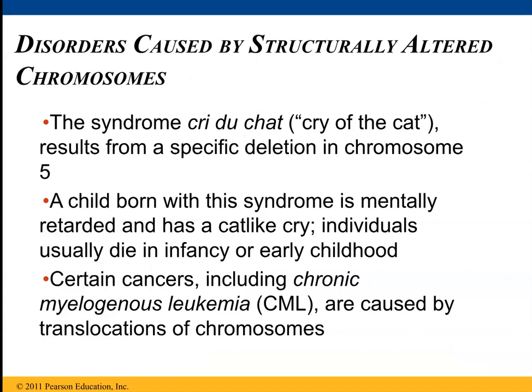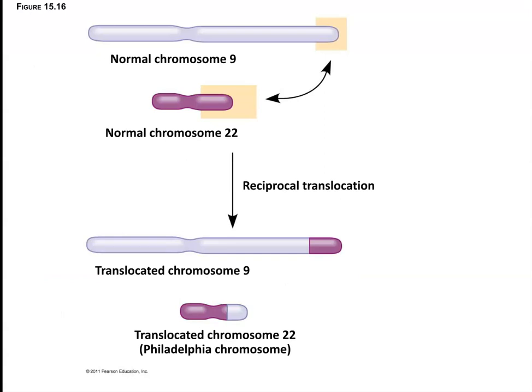A specific deletion of chromosome 5 is called Cri du Chat, or cry of the cat. Chronic myeloid leukemia is due to a specific translocation called the Philadelphia chromosome, where a portion of chromosome 9 is translocated onto chromosome 22 and vice versa, producing the BCR-ABL chimeric protein that causes B-cells to constantly be in cell division.